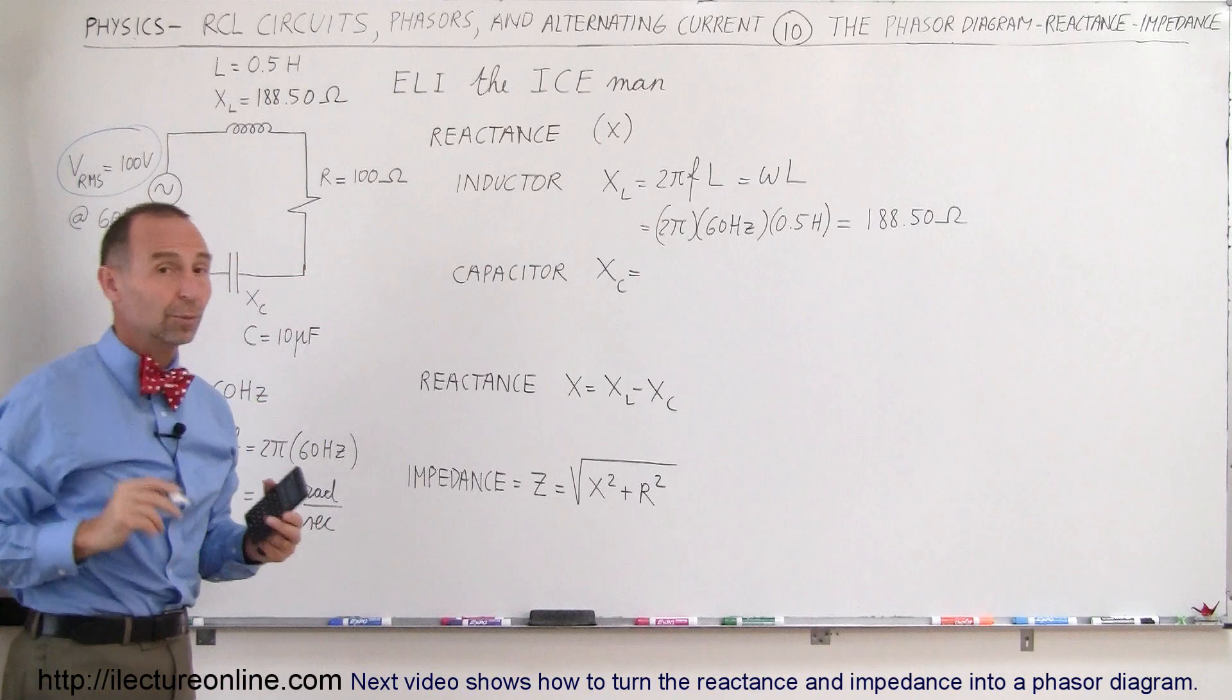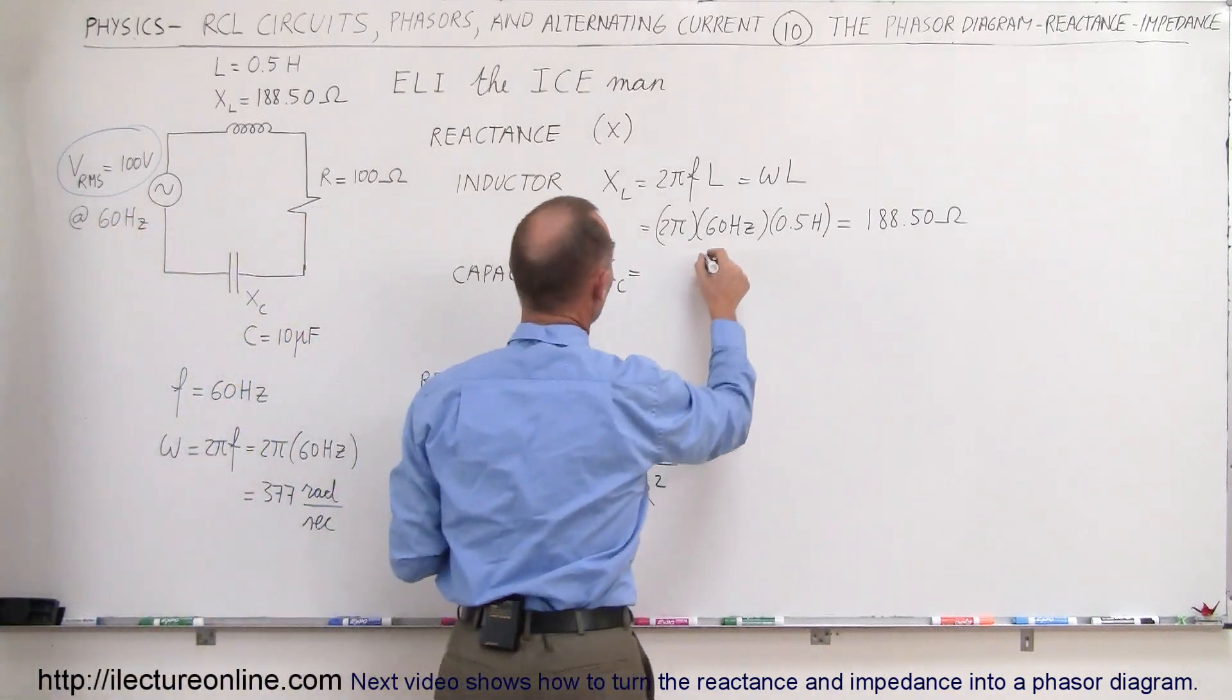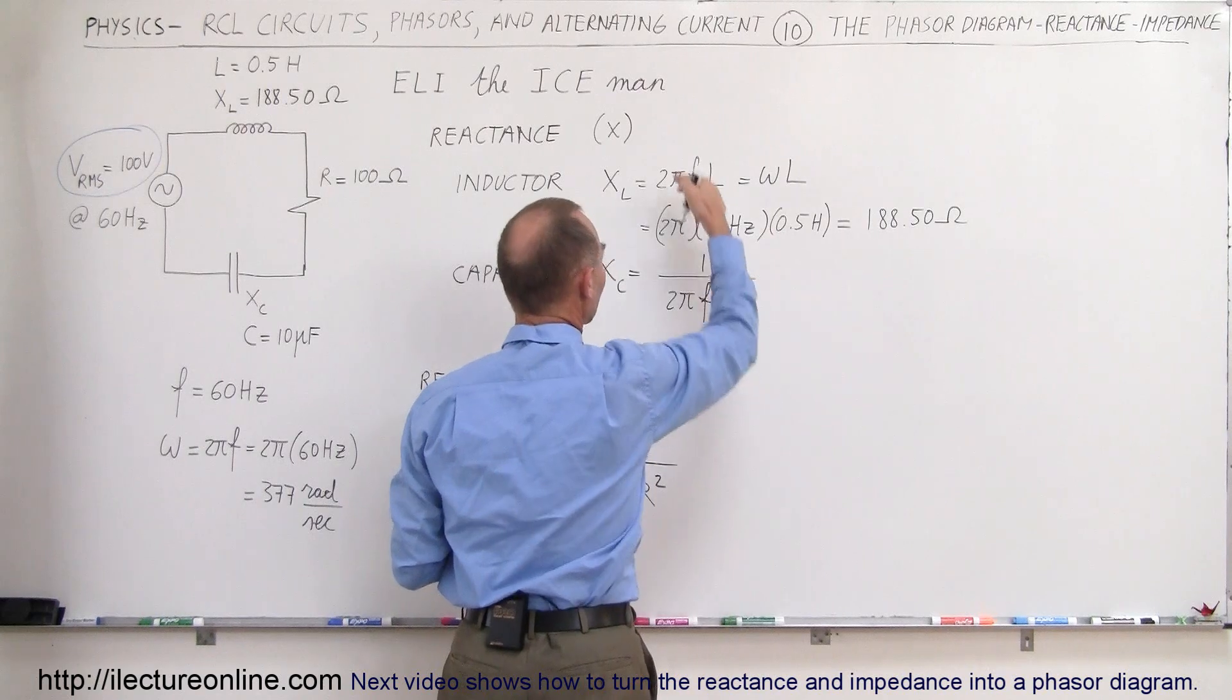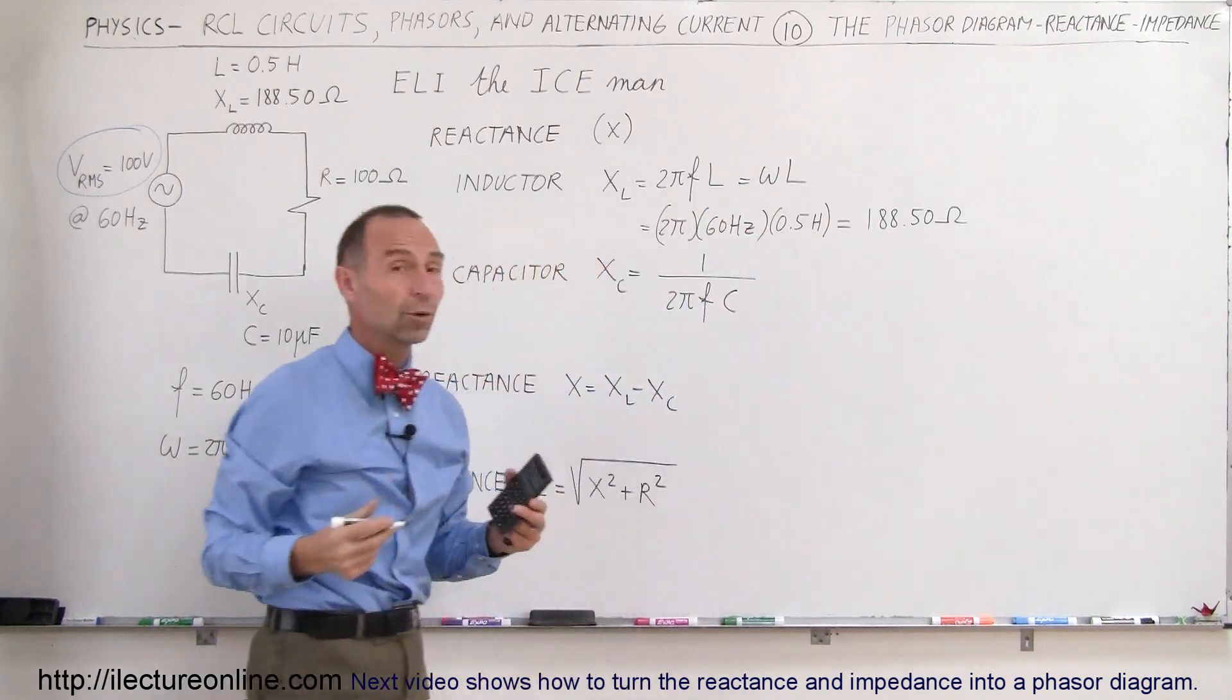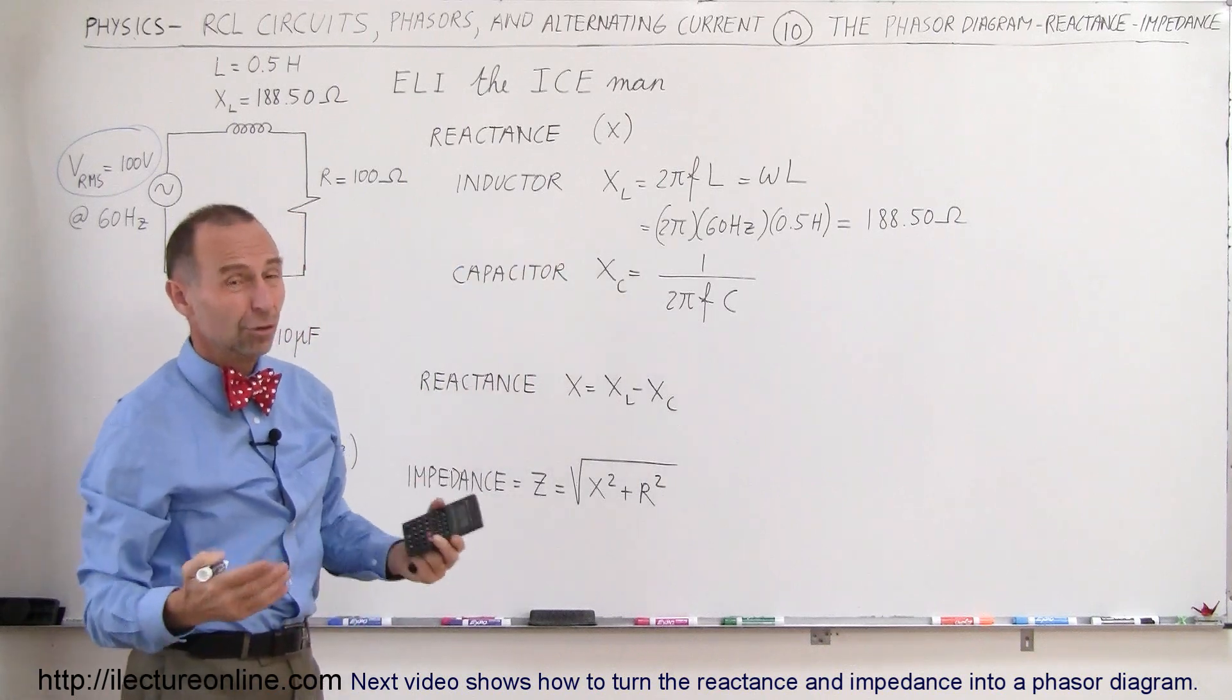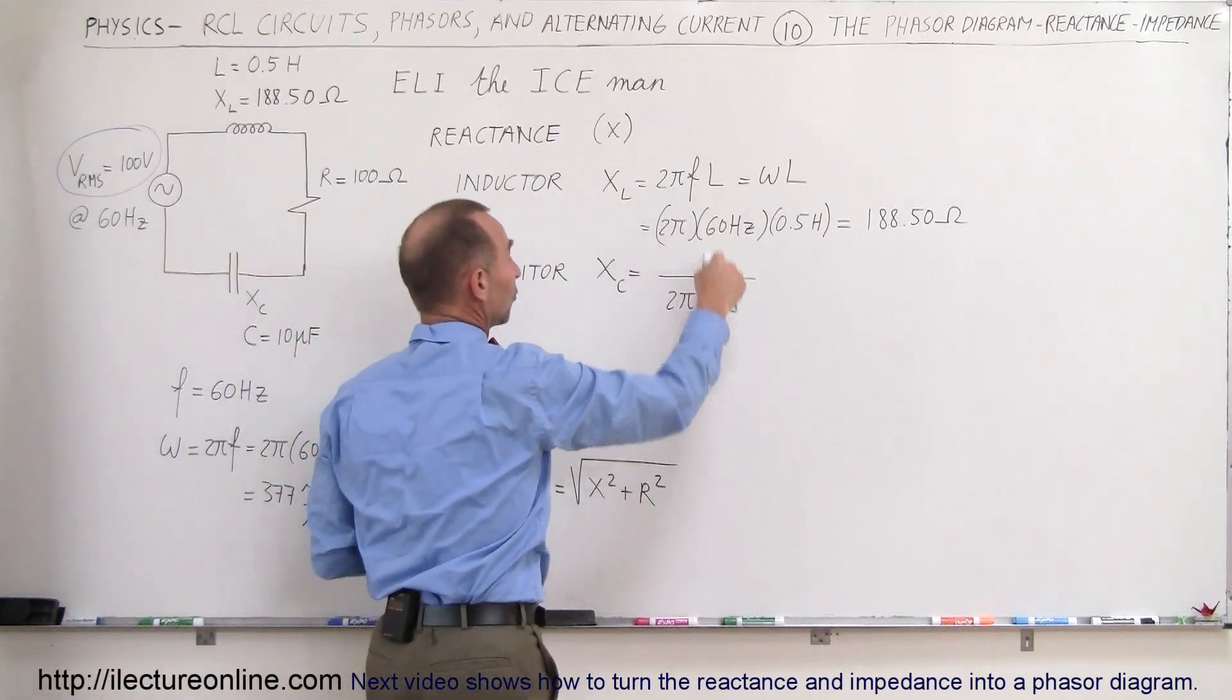All right, how about the capacitor? Well, the equation for that is 1 divided by 2πfC. So you see there's a lot of similarities between those two equations, except for the capacitor it's in the denominator. For the inductor, it's in the numerator. And of course, it's the inductance versus capacitance.